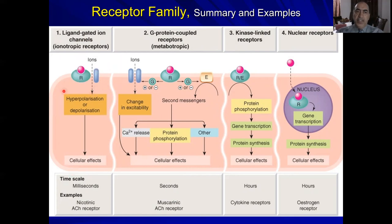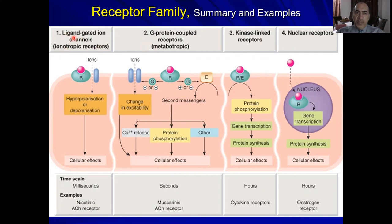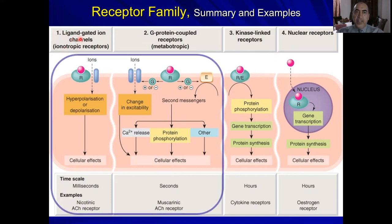Looking at the cell and the cell membrane, we can identify three cell membrane-bound receptors and only one nuclear or intracellular receptor type. We are not going to discuss kinase-linked or nuclear receptors — we are going to focus only on ligand-gated ion channels and G-protein coupled receptors.